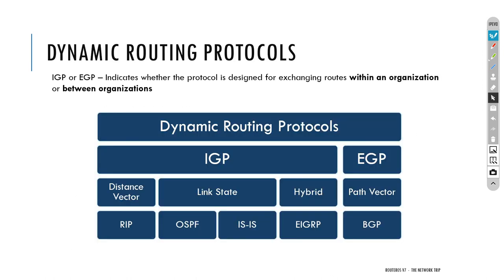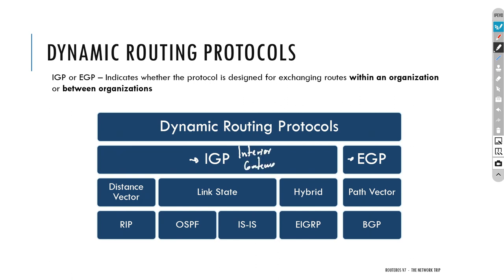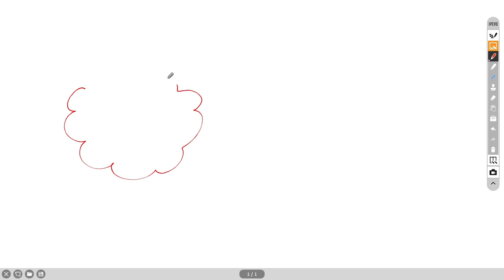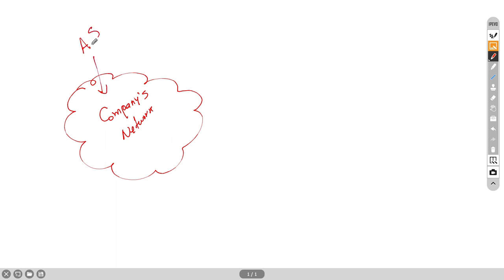There are two big categories of dynamic routing protocols: IGP (Interior Gateway Protocol) and EGP (Exterior Gateway Protocol). If you work for a service provider or organization, that is your Autonomous System — and inside your network you use an IGP such as OSPF. A second company will have its own Autonomous System and may run a different IGP, for example IS-IS. IGPs are used inside individual Autonomous Systems.